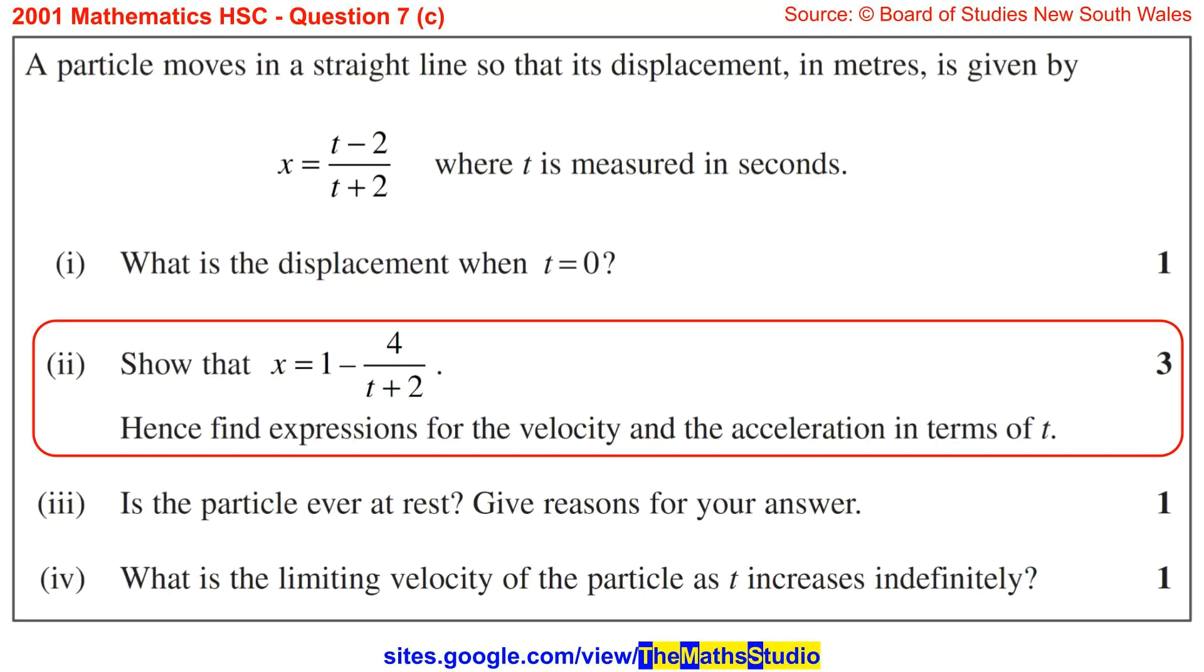Part 2. Show that x equals 1 minus 4 over t plus 2. Hence find expressions for the velocity and the acceleration in terms of t.